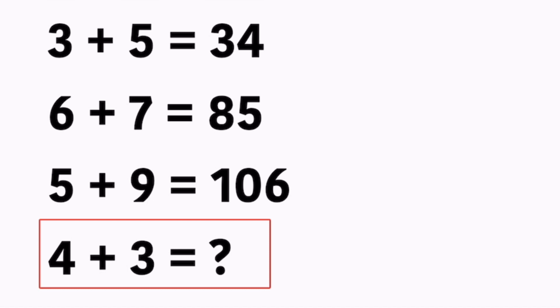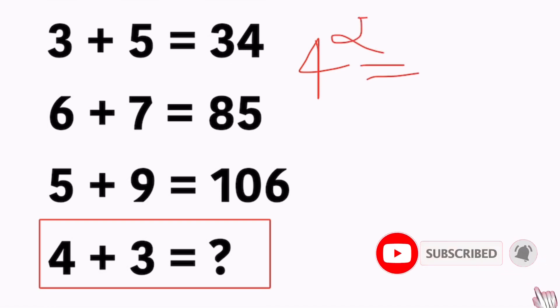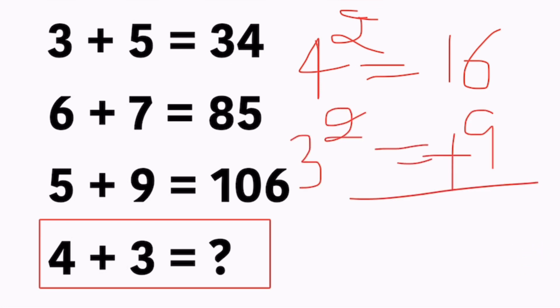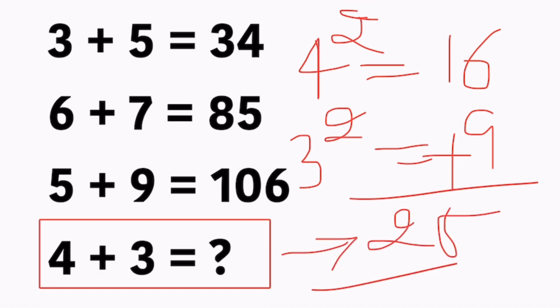First step: take the first number, 4, and square it — 4 squared equals 16. Take the second number, 3: 3 squared equals 9. Last step: add both numbers — 16 plus 9 equals 25. Therefore, the question mark's value equals 25.